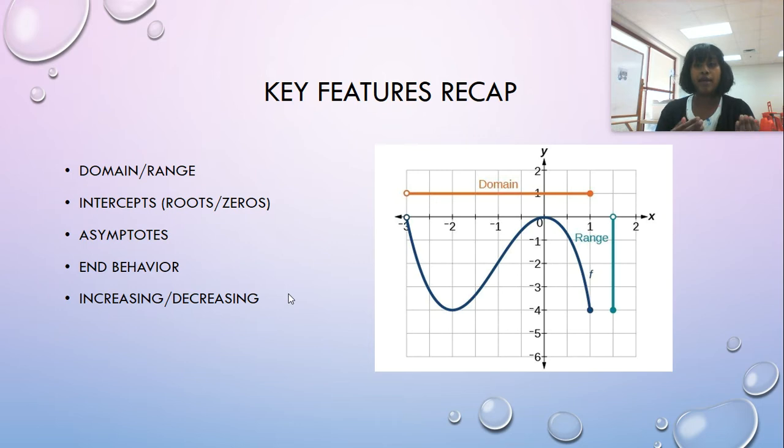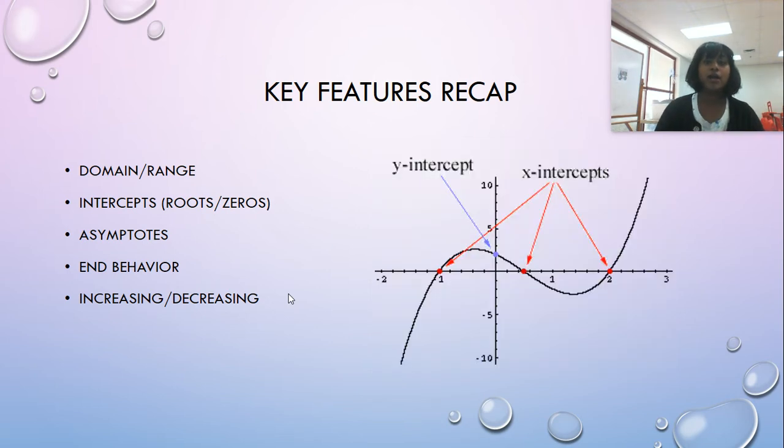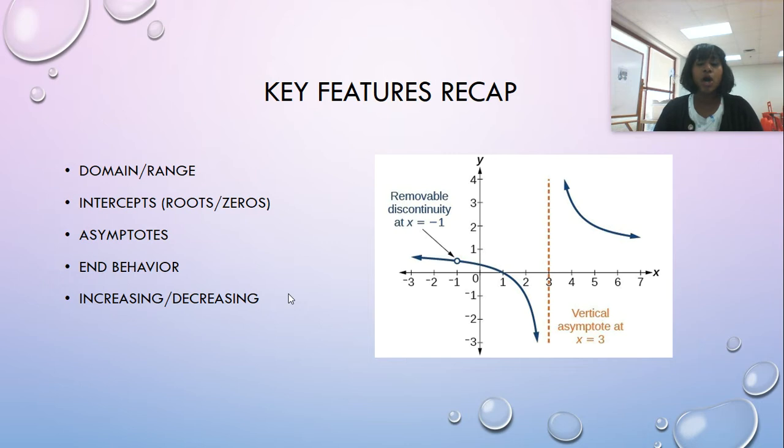Domain is literally what are the x values that a function or expression can exist in. Range is what are the y values that a function or expression can exist in. Our intercepts, if we're talking about the y-intercept, that would be where I hit the y-axis. If we're talking about our roots or zeros or our x-intercepts, it's where I hit the x-axis. Our asymptotes are lines that we can approach but typically don't cross. If you remember from our rational functions, you learn that every now and then we have a funky function where you can cross in the center. But remember, asymptotes are talking about truly the ends. So at the ends, we are not crossing. We're approaching those lines, but we cannot cross them.